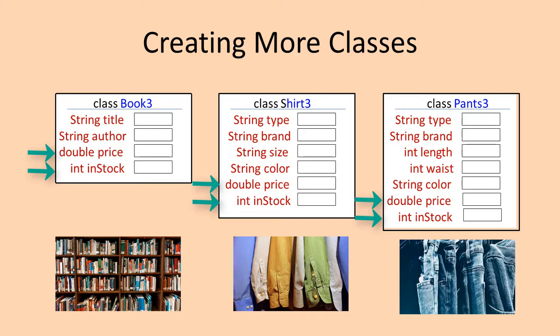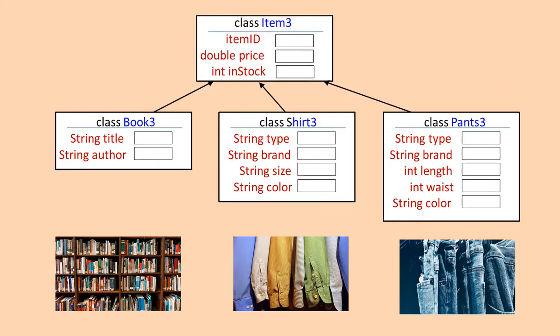There needs to be a way of reducing the extra overhead. To get things more organized, I am providing a base class, also sometimes called a super class. I am naming my base class item3. The only reason that the character 3 is part of the name is because I am in part 3 of the discussion. Class item has the fields for item ID, price, and in stock. Each of the other classes can inherit everything from class item and then just provide the additional fields that are needed.